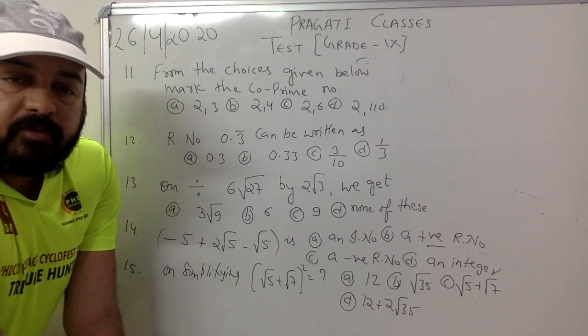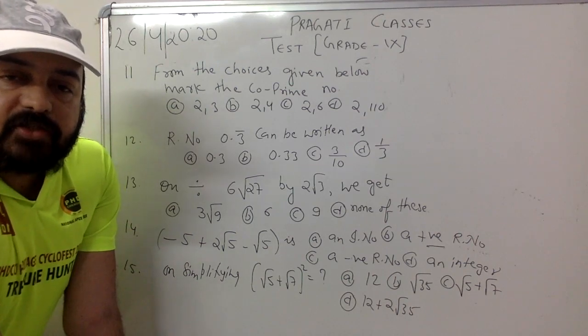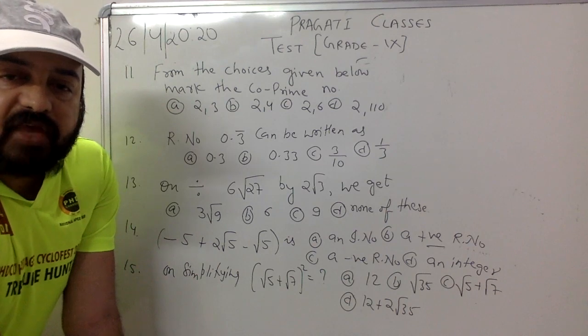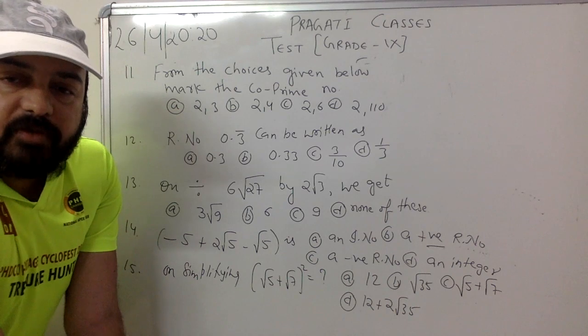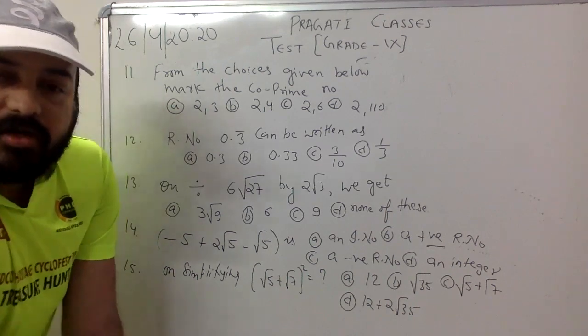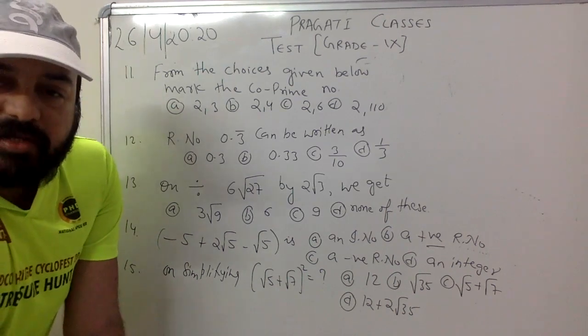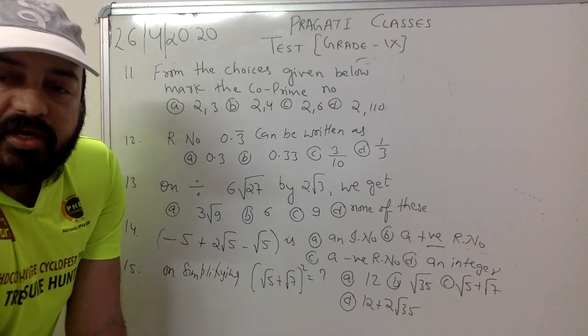Question number 14. Bracket open minus 5 plus 2 root 5 minus root 5 is: option A an irrational number, option B a positive rational number, option C a negative rational number, and option D an integer.